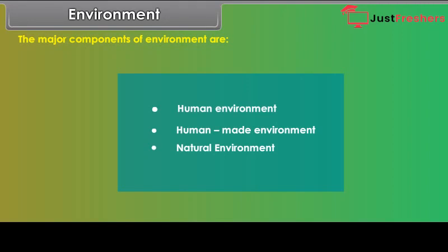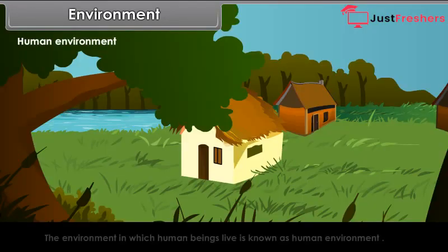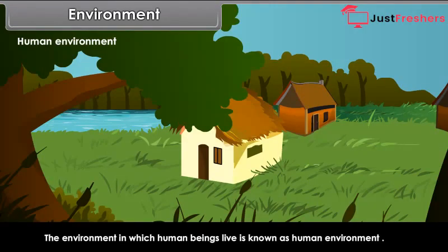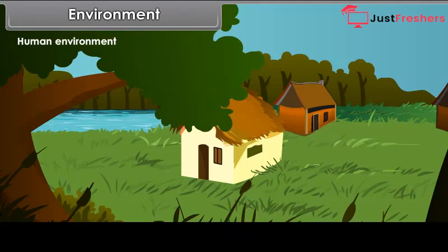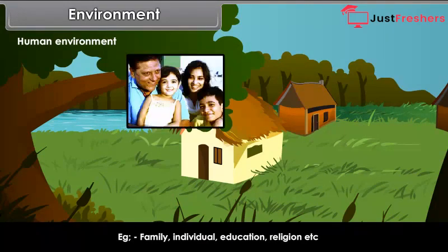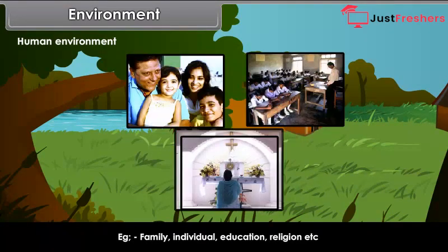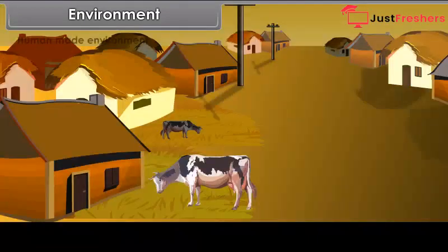Human environment: The environment in which human beings live is known as human environment. Examples include family, individual, education, religion, etc.